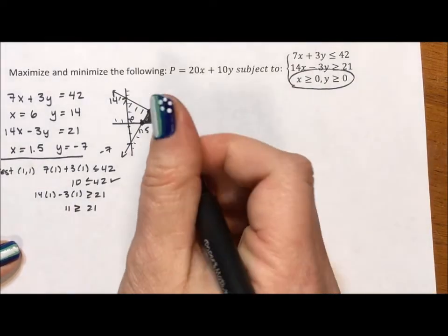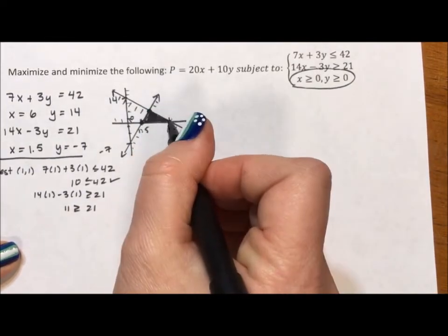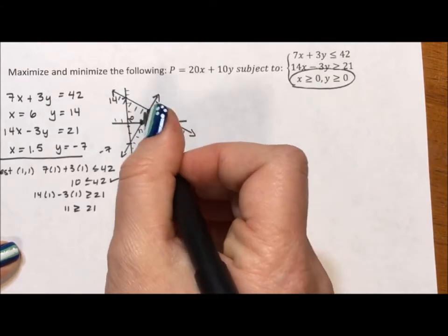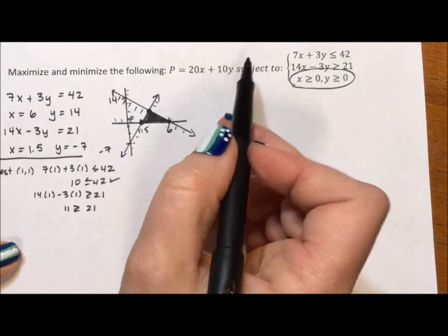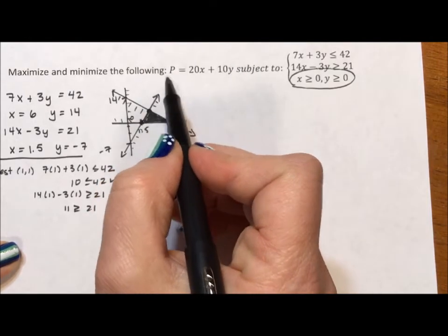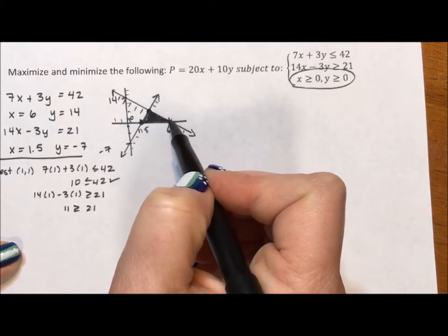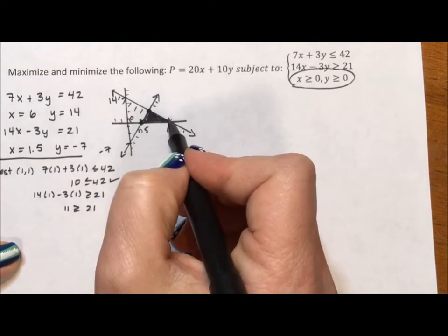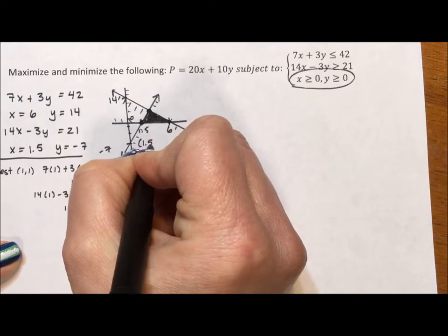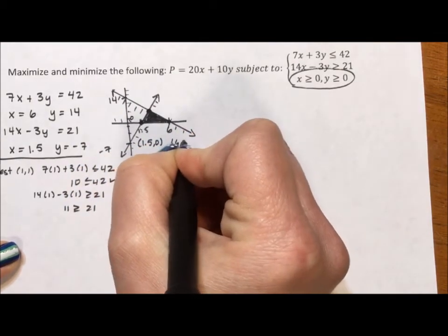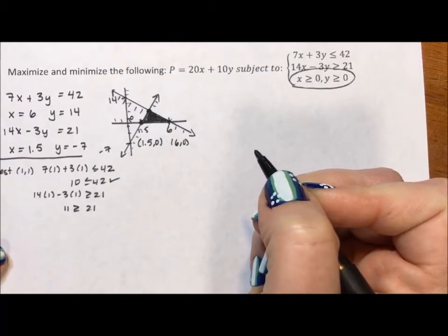Okay, so like I said at the beginning, if I can calculate the intercepts, the corners of this triangle, they will provide the ordered pairs that are the maximum and the minimum for this equation. Even though I have an infinite number of points, the maximum and minimum will be found amongst these three points. Well, this point is (1.5, 0) and this point is (6, 0). I don't know what that point is. I'm going to have to do a little bit of work to figure it out.